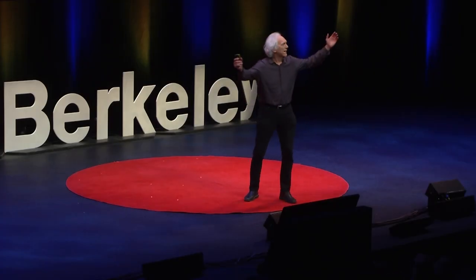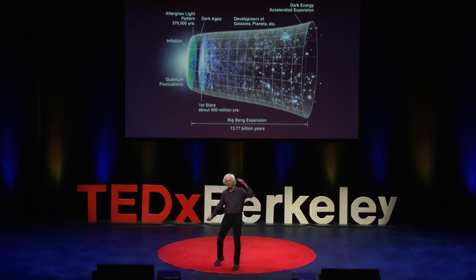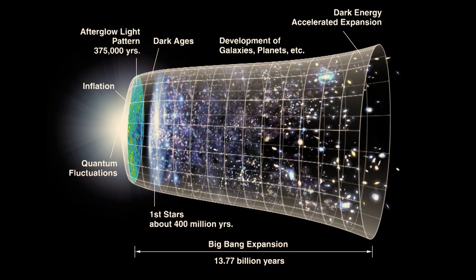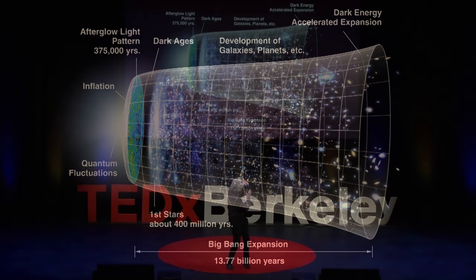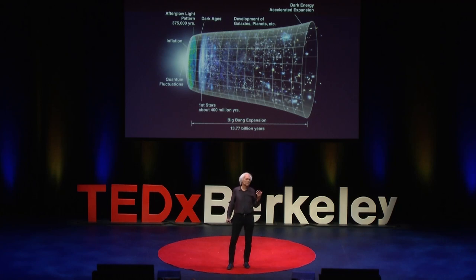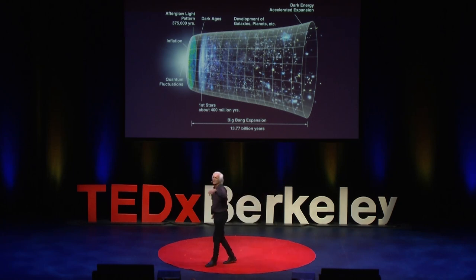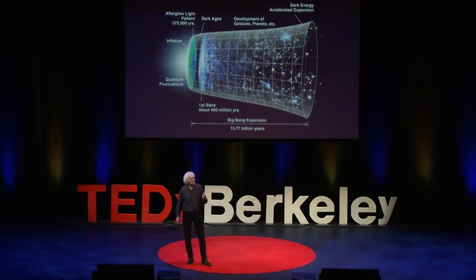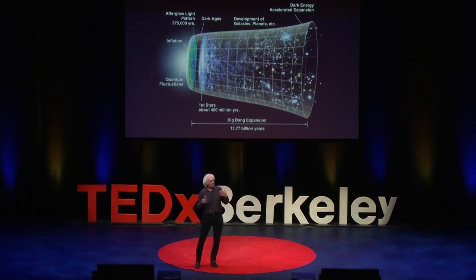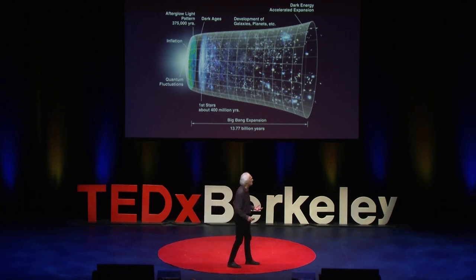We're going to look at the big story of the universe — the third story of the universe — and this image right here tells the whole story. It starts on the left and goes to the right in terms of time. Right at the very beginning, the universe consists of elementary particles. The elementary particles from that moment are involved in all transformations over the ensuing 14 billion years. What's amazing is that the elementary particles of our bodies are right there — this is our story.